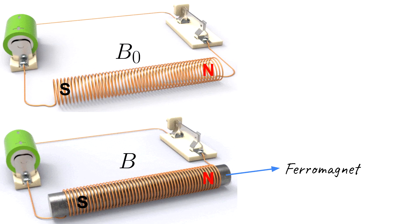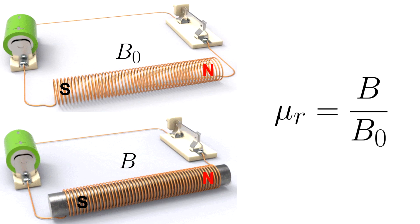Iron is a ferromagnetic material, which means when ferromagnets are placed in a magnetic field they are magnetized strongly along the field. Relative permeability of a material is the ratio of the magnetic field strength after a material is placed inside the magnetic field to the magnetic field strength before it was placed — that is, the field strength in vacuum.